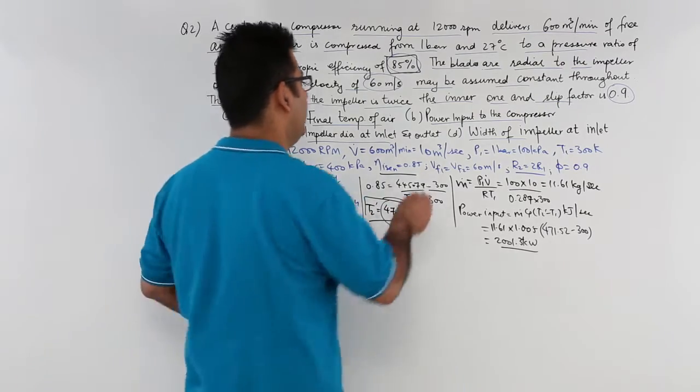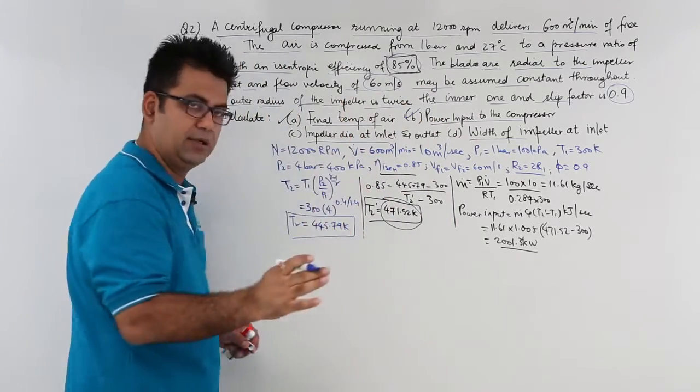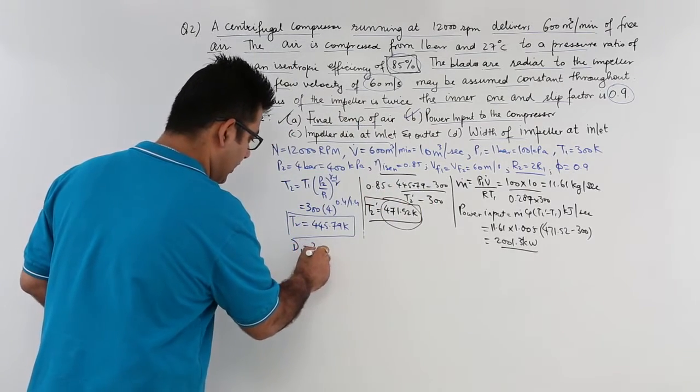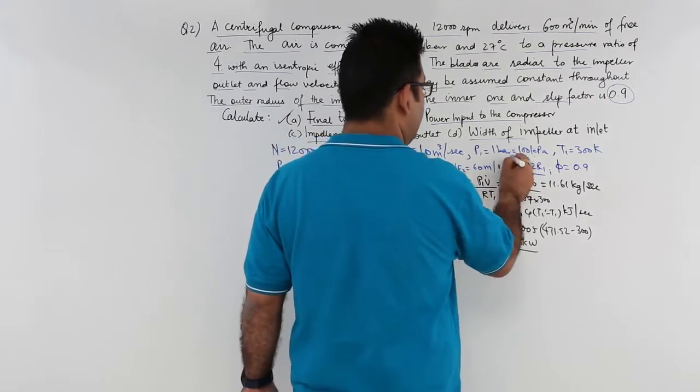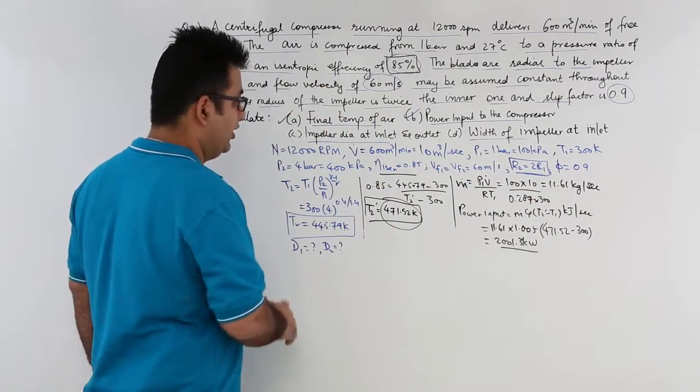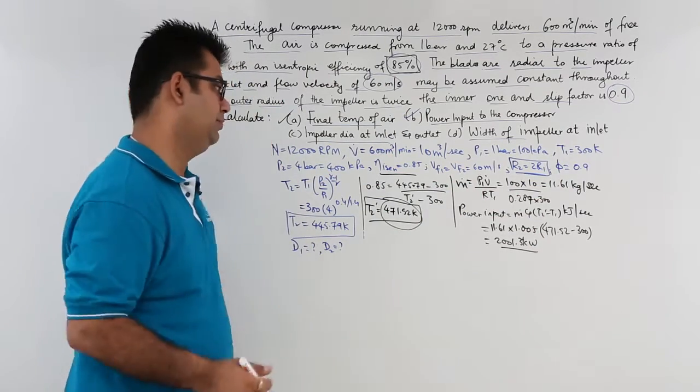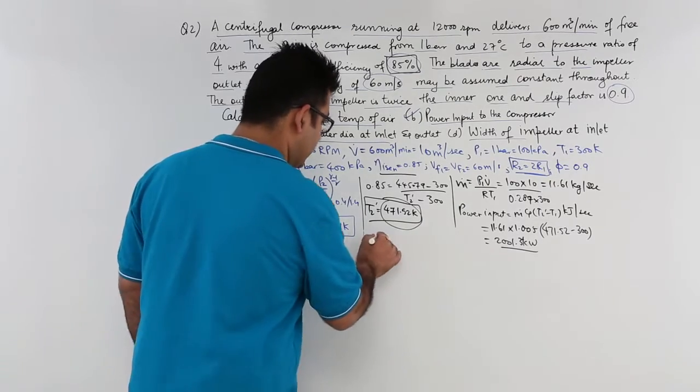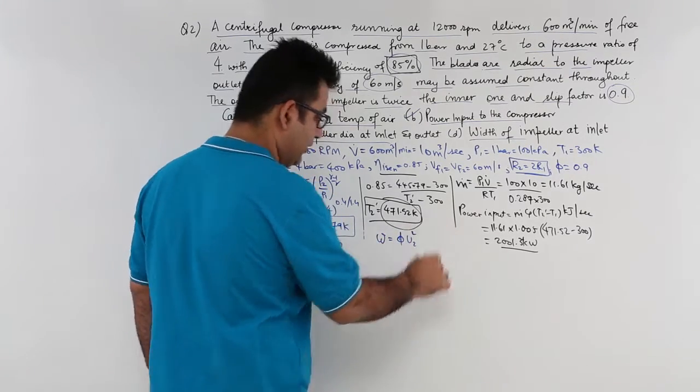Now let us come to the third part which is the impeller diameter at inlet and outlet. Let us say the impeller diameter at inlet is D1 and the outlet is D2. We have the relation between the radii of the inlet and outlet. So the same expression would apply on to diameter values. Let us start with the outer most that is D2. So we know that the work done per kg, small w, is equal to phi into u2 square.